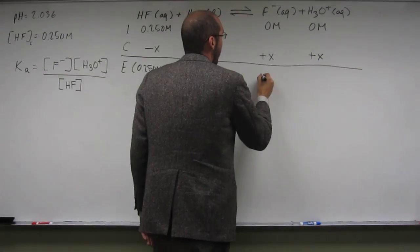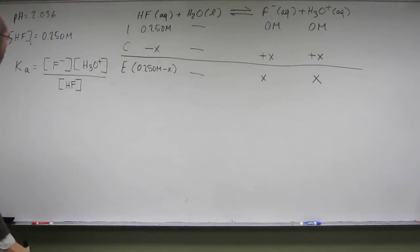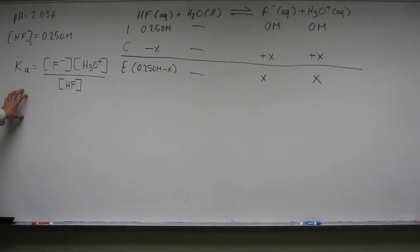is going to be for HF 0.250 molar minus X, and F is going to be X, and H3O plus is going to be X. So let's just go ahead and put these equilibrium values in for Ka.